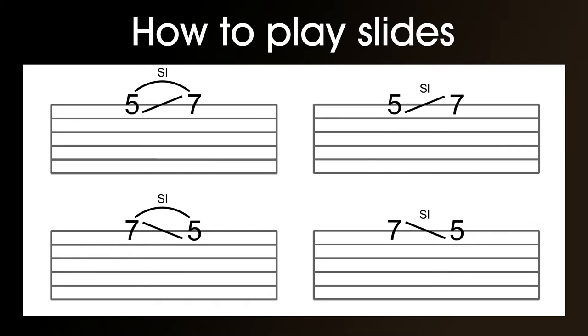So let's summarize the four main basic slide symbols. We have a slide up with the slur, the slide up without a slur, the slide down with a slur, and the slide down without a slur.